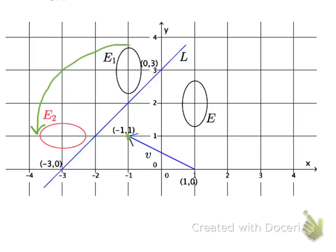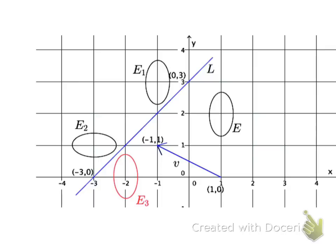The only thing left to do now is the reflection across line L. Our final image, E3, after all three transformations, ends up down here. So we went from E to E1 to E2 and finally to E3.